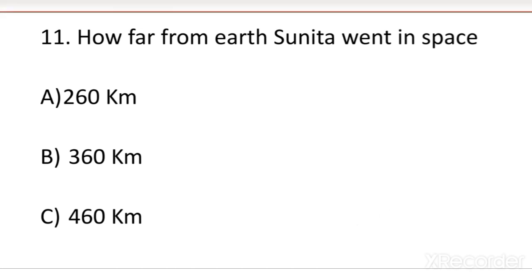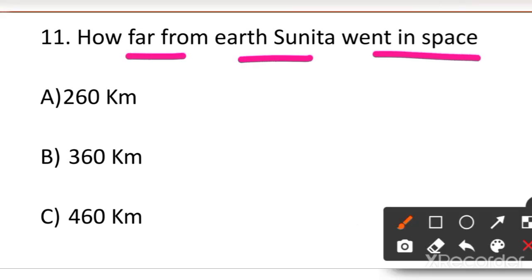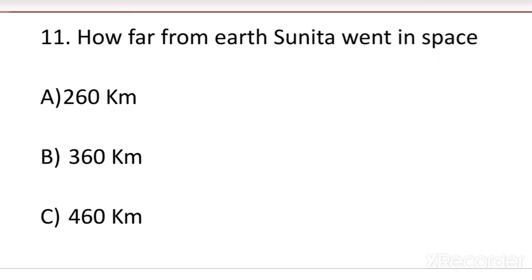The first question is: how far from Earth did Sunita go into space? This is an important line from NCERT and can come in the exam. Your options are: 260 km, 360 km, or 460 km. How far away was Sunita Williams in space from Earth? You will know all the answers at the end of the video.